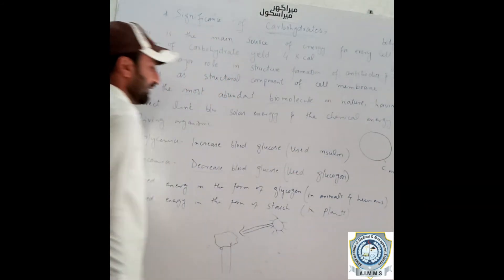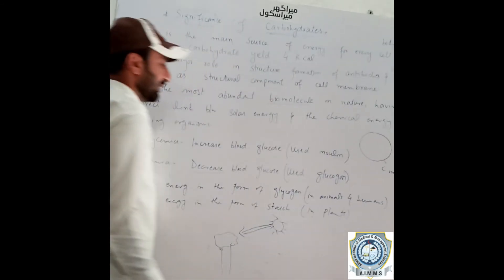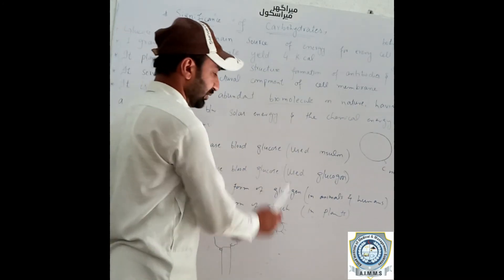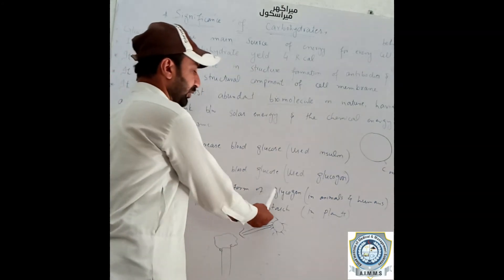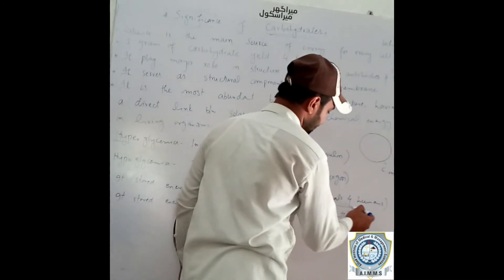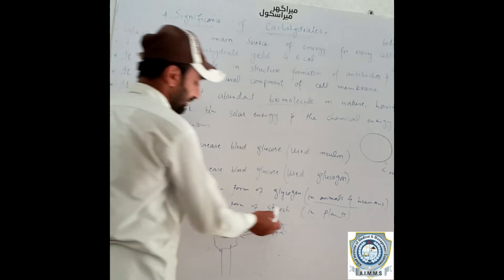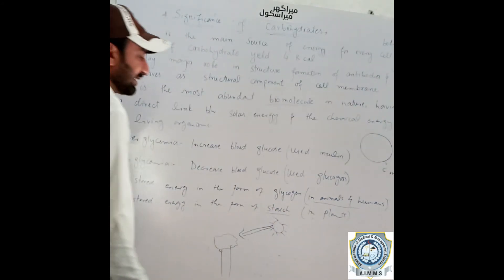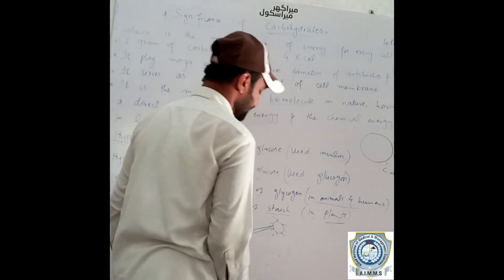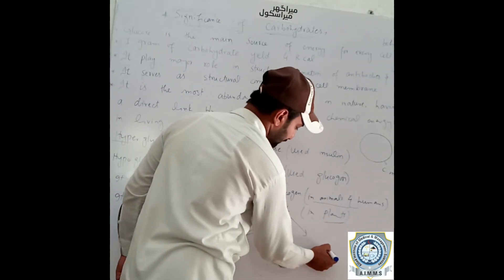Insulin is used to regulate blood glucose. Excess glucose is stored in the form of glycogen as an energy reserve in the body.